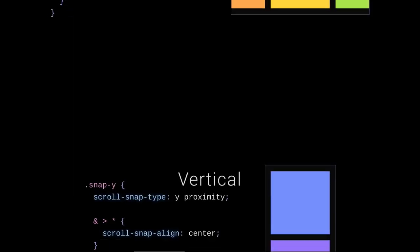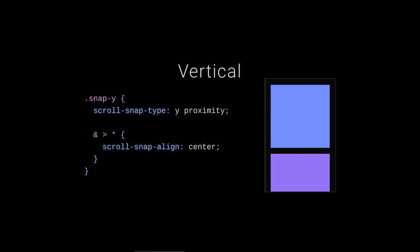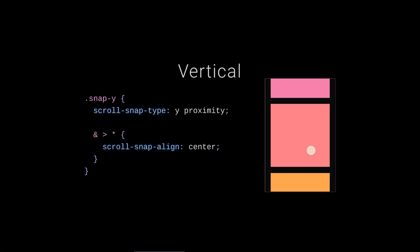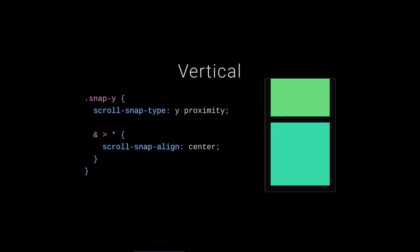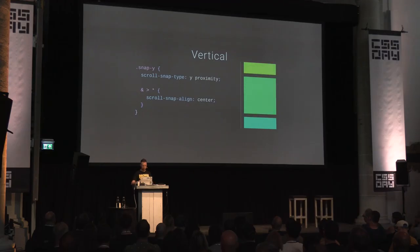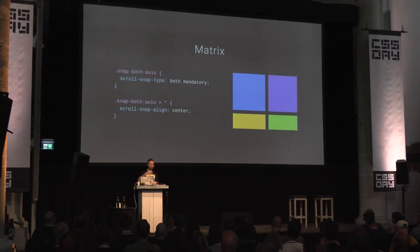Here's your basic vertical scroll snap — I used 'y proximity' just to show the difference. In these examples you won't notice much difference since everything is tightly packed and every child is a snap point. Vertical scroll snap is really nice for scrollytelling — Apple made it famous where you scroll and it snaps to the next dot. You can build good storytelling with scroll snap, just like a paged book.